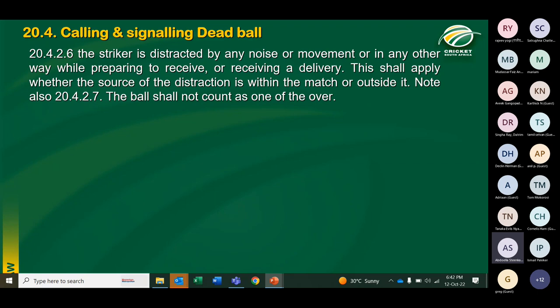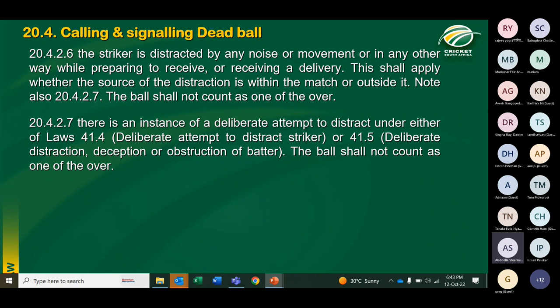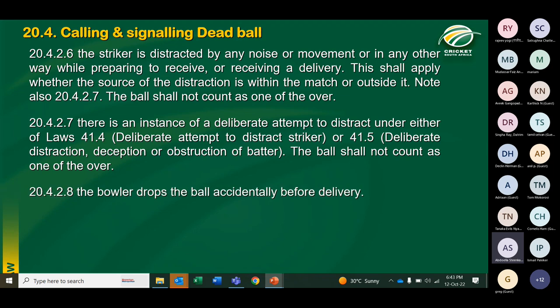Call and signal dead ball if the striker is distracted by any noise or movement while preparing for the delivery — for example, if someone walks in front of the sightscreen and the striker is distracted by that. You will also call and signal dead ball if there is a deliberate attempt to distract the striker, or a deliberate distraction, deception or obstruction of the batter; these are covered under Law 41.